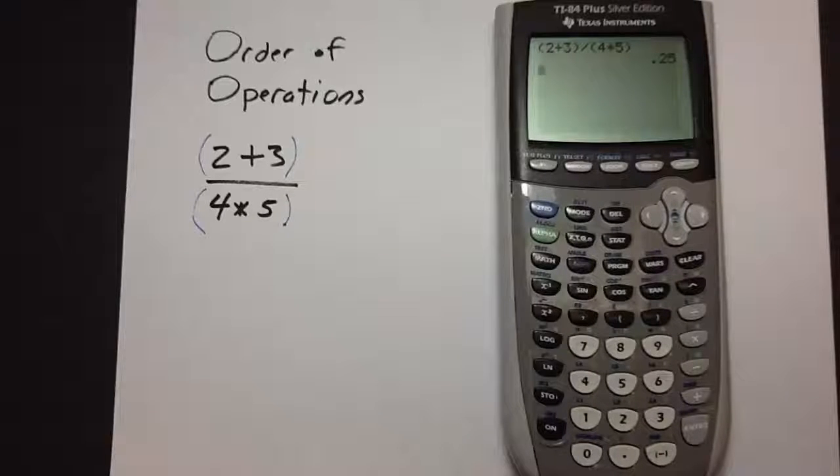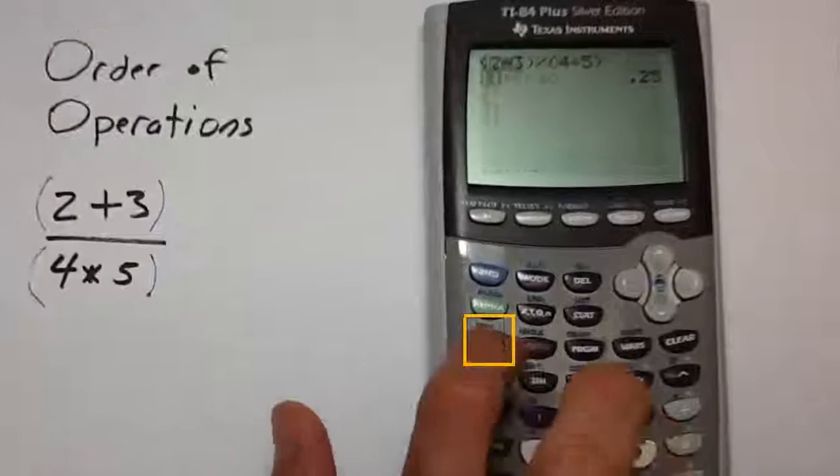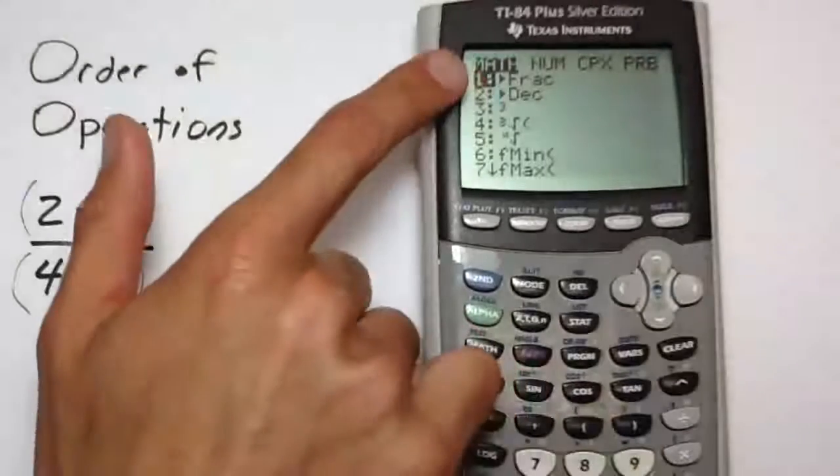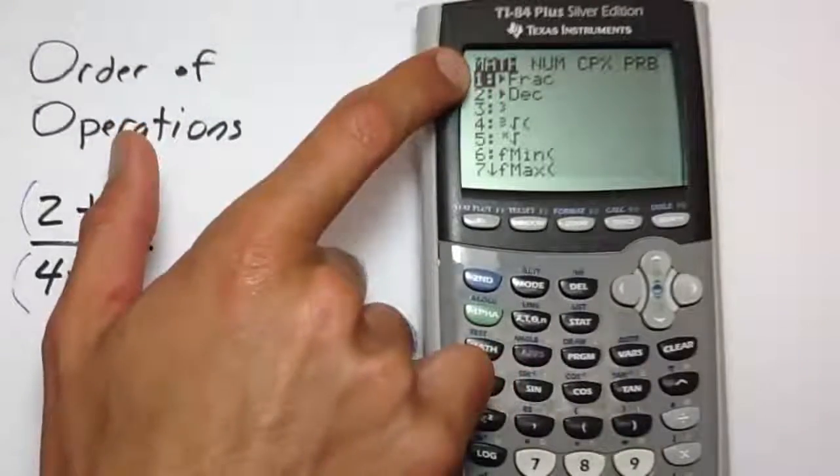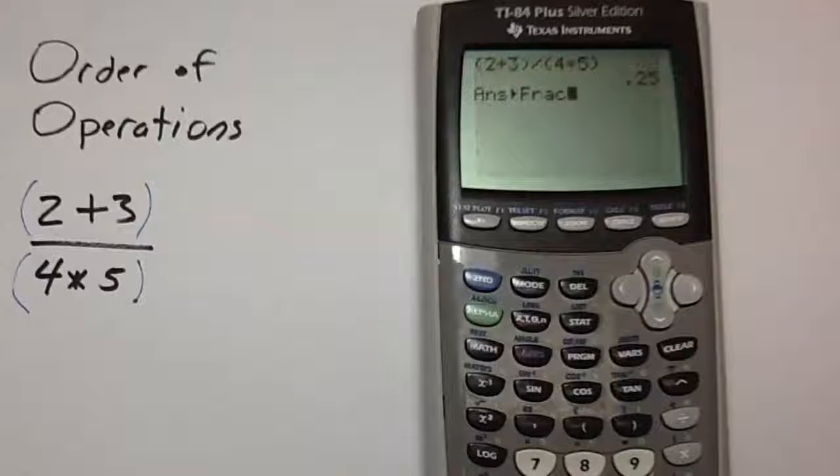To change this into a fraction, it's very similar to the TI-83. We press math, and then option 1 will be changed fraction. Press enter, and enter one more time. This gives us 0.25.